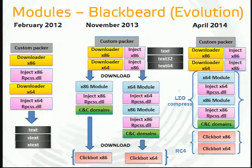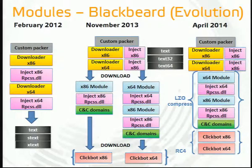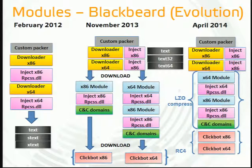Not only PE characteristics were similar, but also the whole file path in debug info was the same. When we checked the structure of Blackbeard recently in April 2014, we found that no stages were present anymore — all code came in one block, compressed using RZO compression and encrypted with RC4.